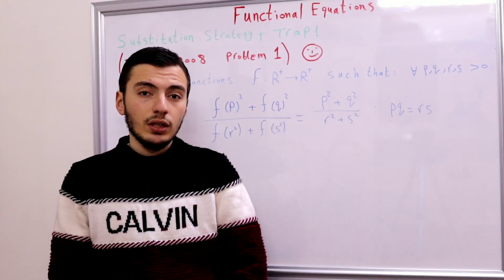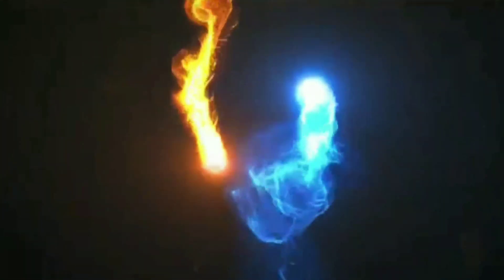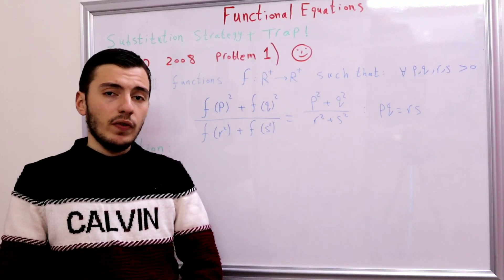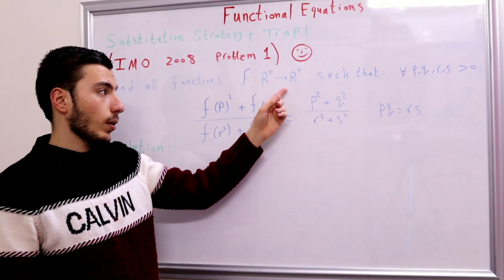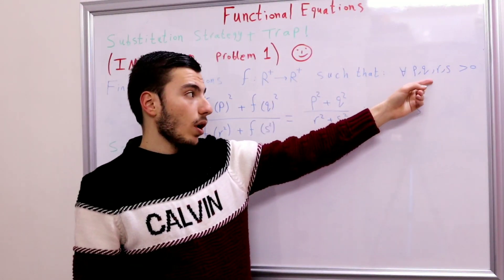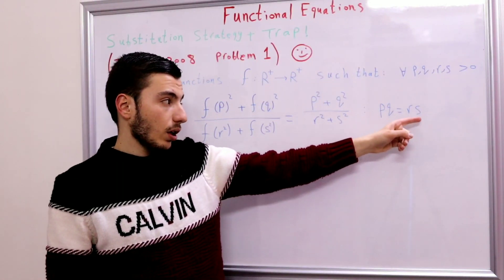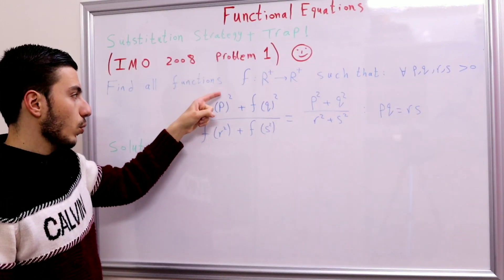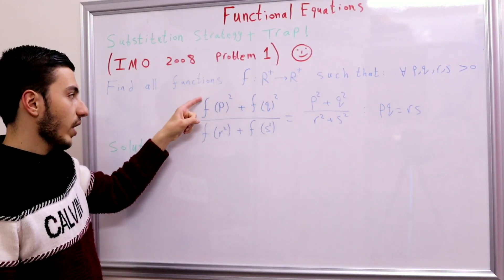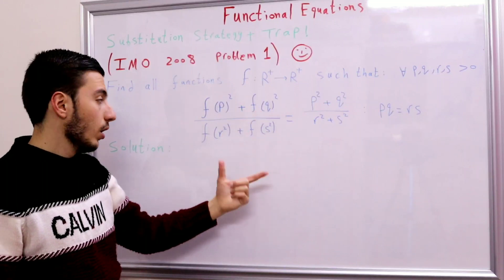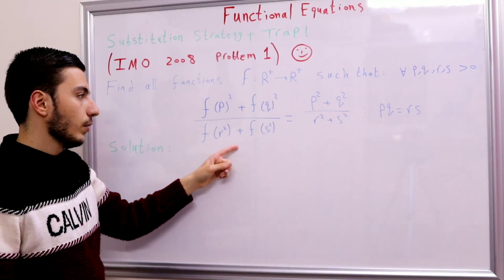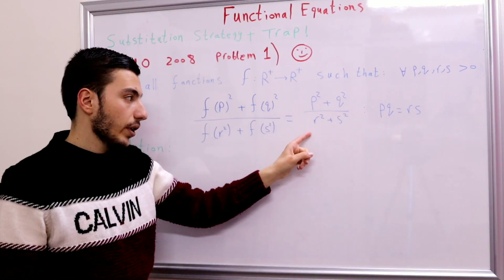We're asked to find all functions f from ℝ⁺ to ℝ⁺ such that for any positive real numbers p, q, r, and s satisfying p·q = r·s, we get the identity: (f(p)² + f(q)²) / (f(r)² + f(s)²) = (p² + q²) / (r² + s²). Note that f is squared, not p or q.